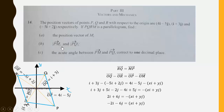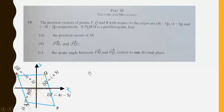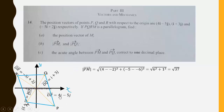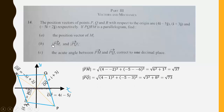Next we determine the magnitudes of PM and PQ. For PM, P has coordinates (4, −5) and M has coordinates (−2, −6), so |PM| = √((4−(−2))² + (−5−(−6))²) = √37 units. For PQ, using coordinates of P (4, −5) and Q (1, 3), |PQ| = √((4−1)² + (−5−3)²) = √73 units.